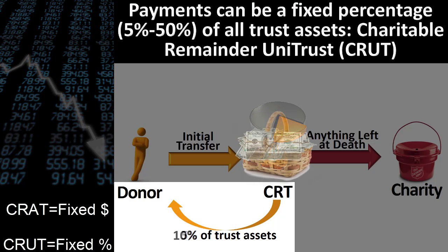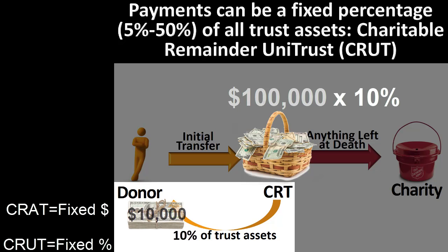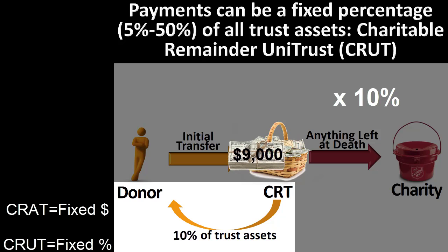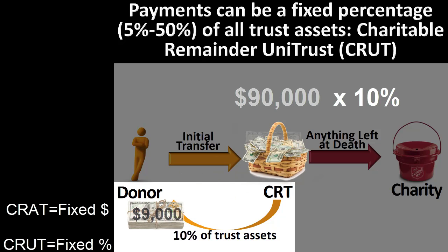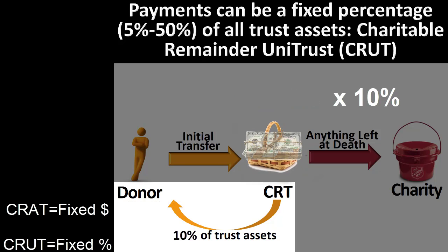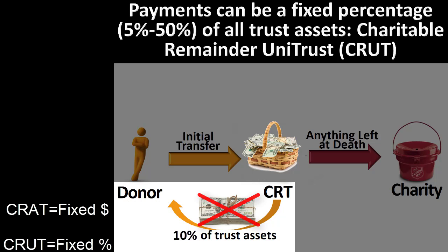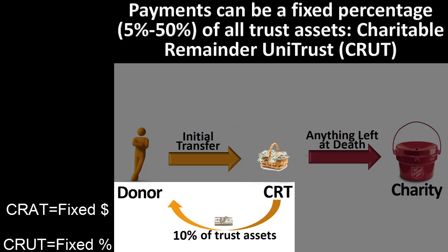The CRUT payment doesn't normally cease because its payment is a percentage of the value of all assets currently held in the trust. For example, if a 10% payout CRUT were established with $100,000 and the money was held in a non-interest-bearing account, the first payment would be $10,000, that is $100,000 times 10%. The second payment would be $9,000, that is $90,000 times 10%. The third payment would be $8,100, that is $81,000 times 10%. The fourth payment would be $7,290, that is $72,900 times 10%, and so forth. The payments would not actually cease, but would just become smaller and smaller over time. Although after 132 years, the payments would fall to less than one penny, so perhaps then the trust payments would necessarily cease.